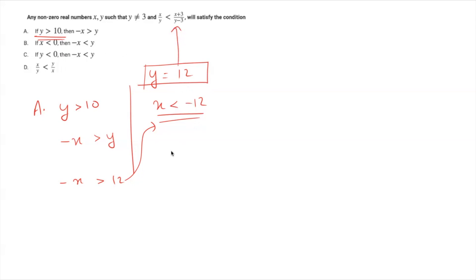Let's check. Put y equals to 12. You will get x upon 12 is less than x plus 3 divided by 12 minus 3. 12 minus 3 becomes 9. So, 3 and 3 will get cancelled. 4 here and 3 here.